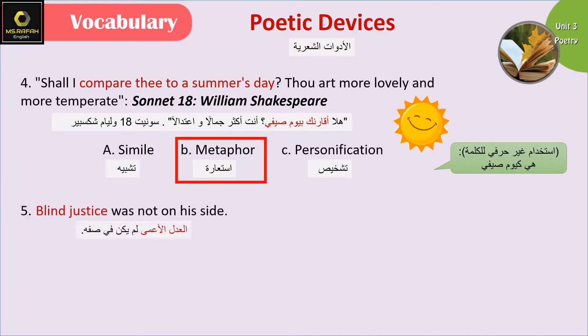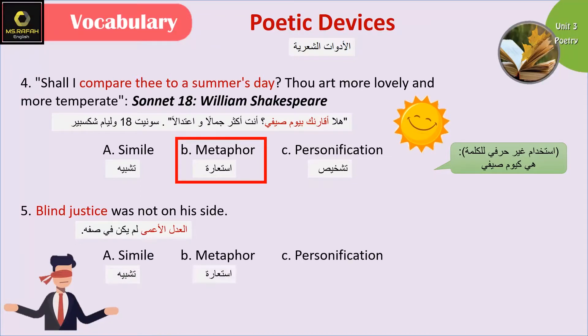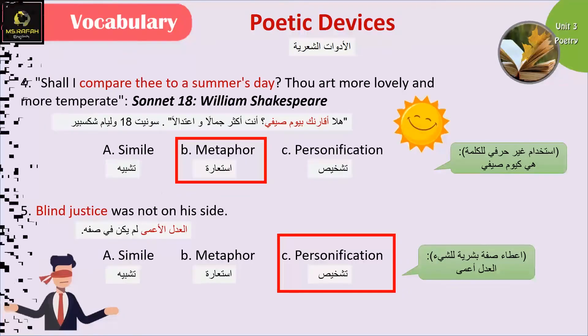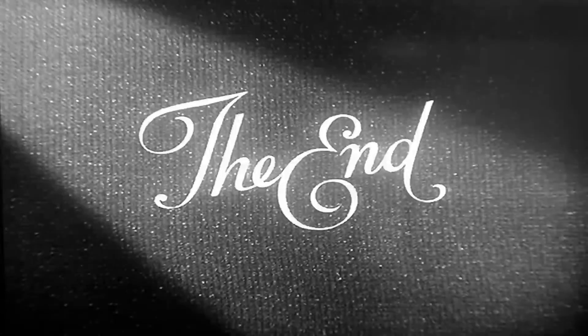'Blind justice wasn't on his side.' عطينا صفة بشرية للشيء — العادل الأعمى — إذن this is personification. Hope I was useful — that's everything for today, see you next lesson!